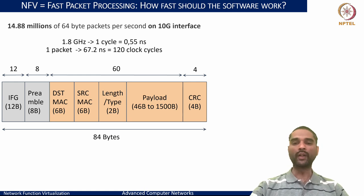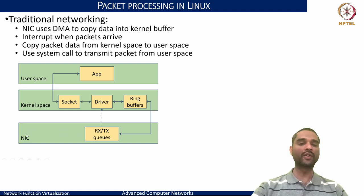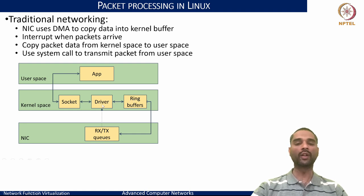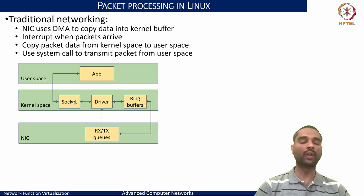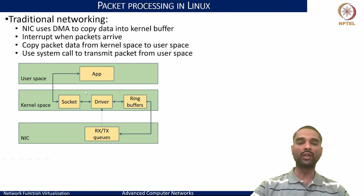To understand this better, let us see what happens in traditional Linux networking when packets arrive. Packets arrive at the NIC and are queued in RxQ or TxQ. An interrupt is fired to the driver, packets are copied into kernel space ring buffers, and then placed onto socket buffers. A system call then awakens the application to start processing.